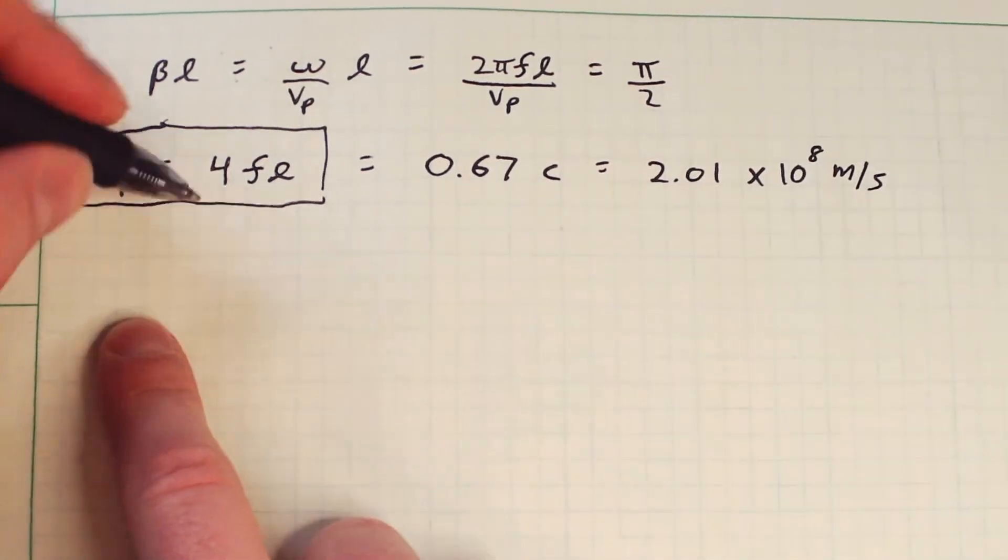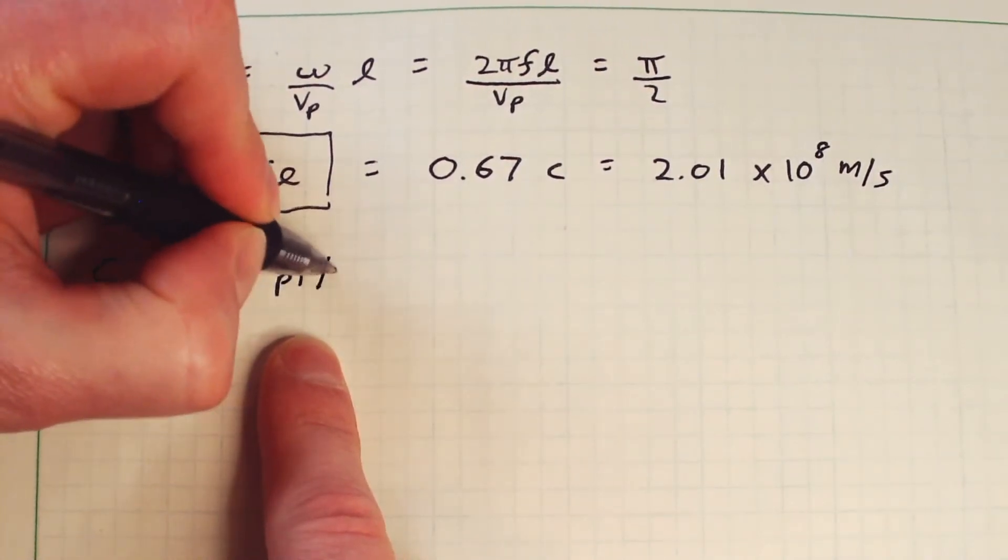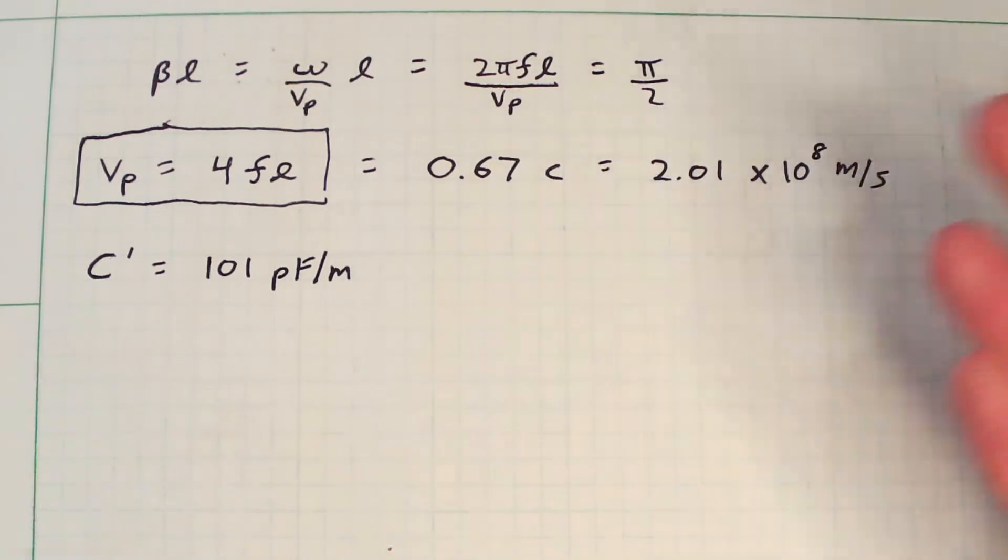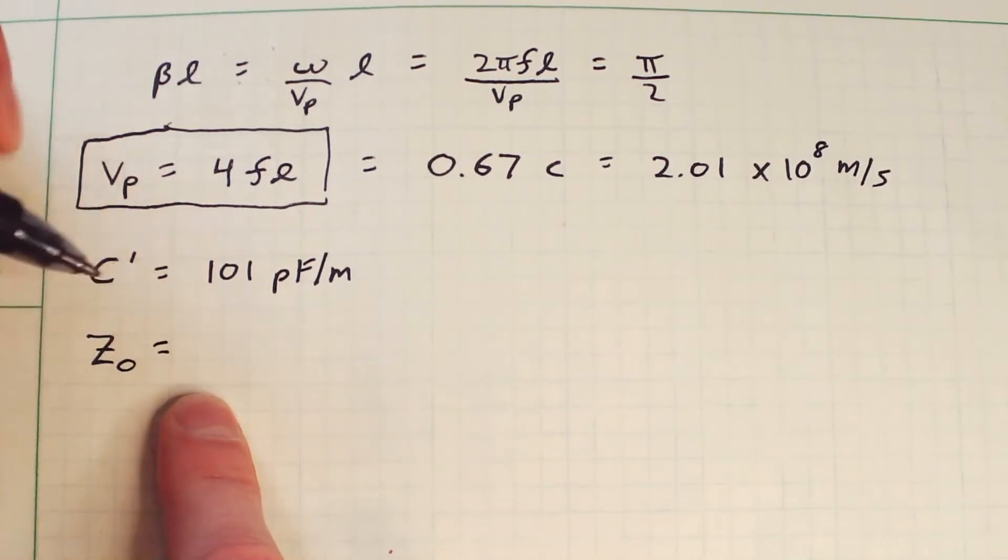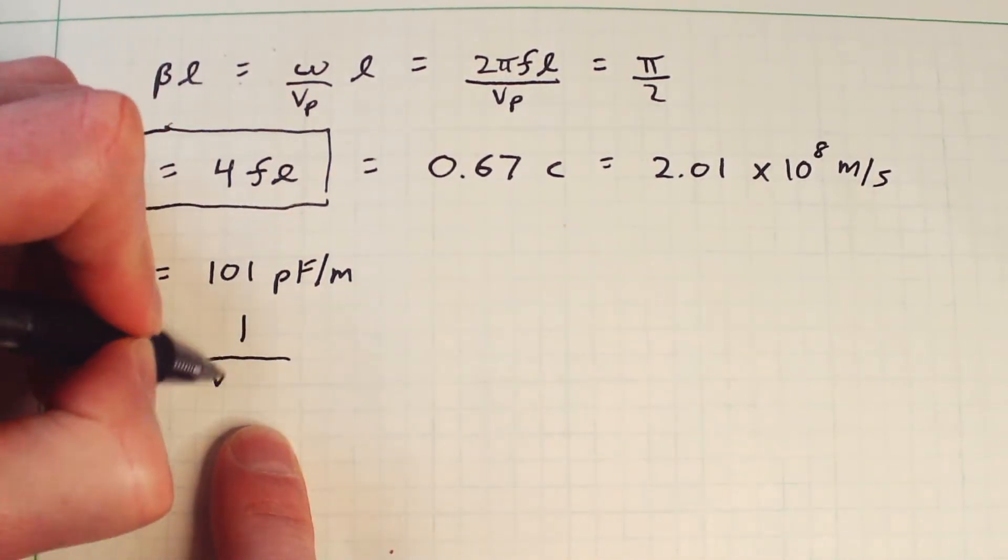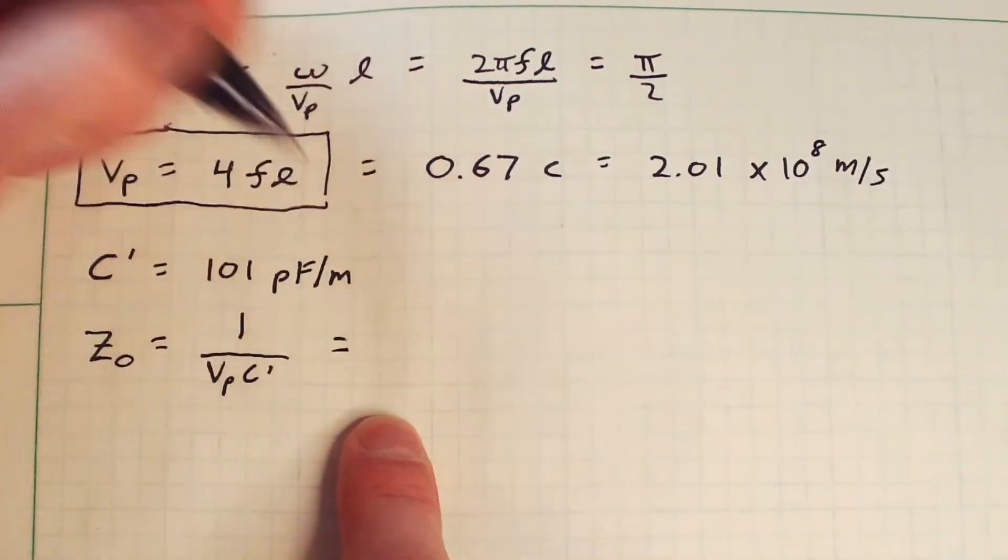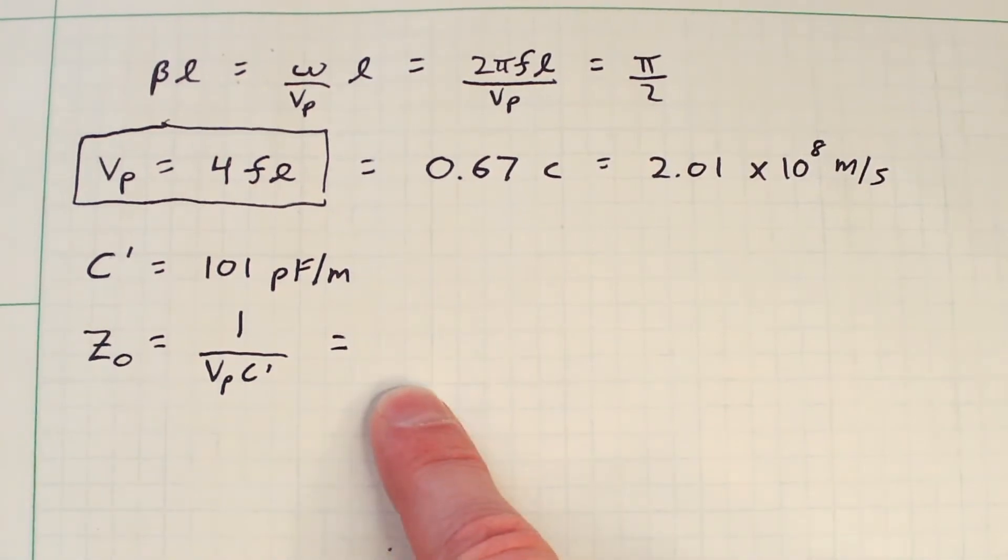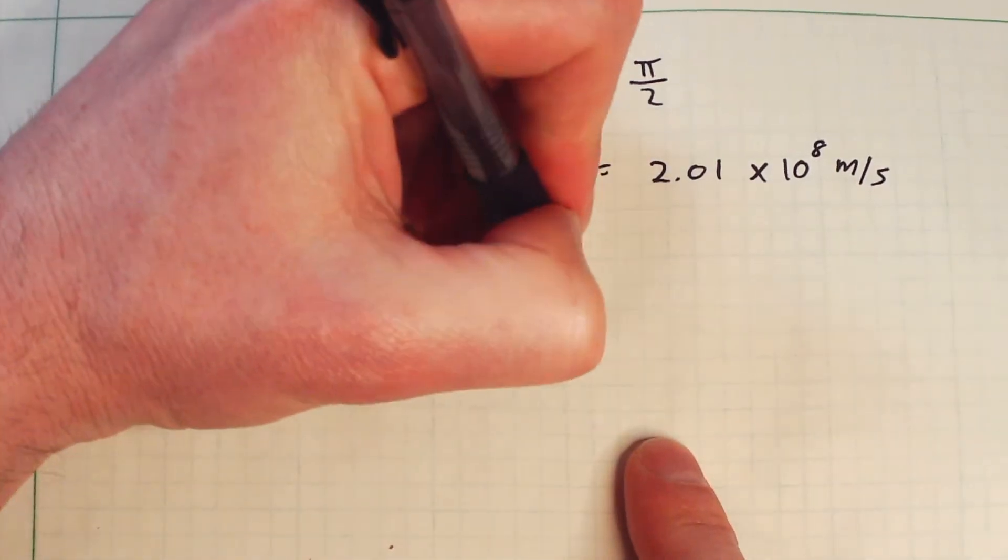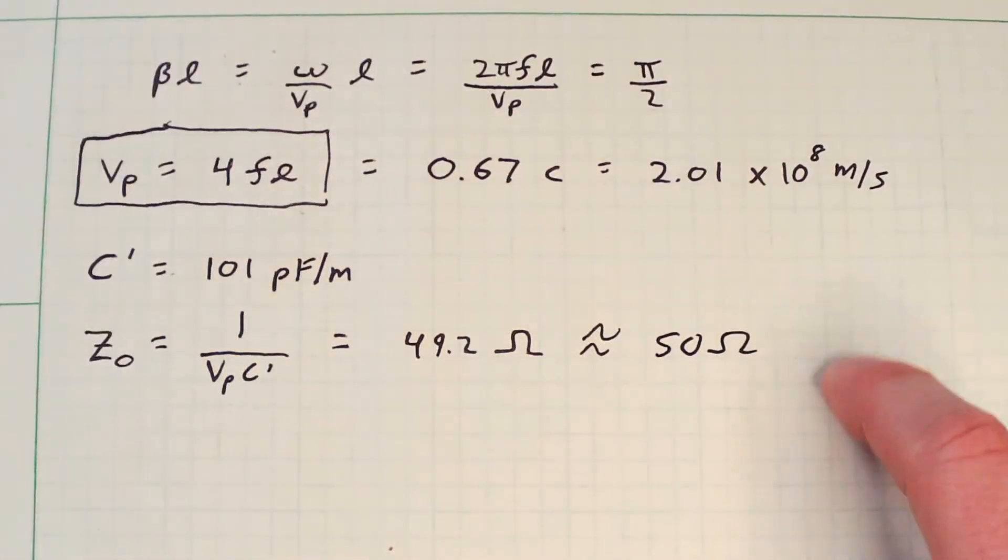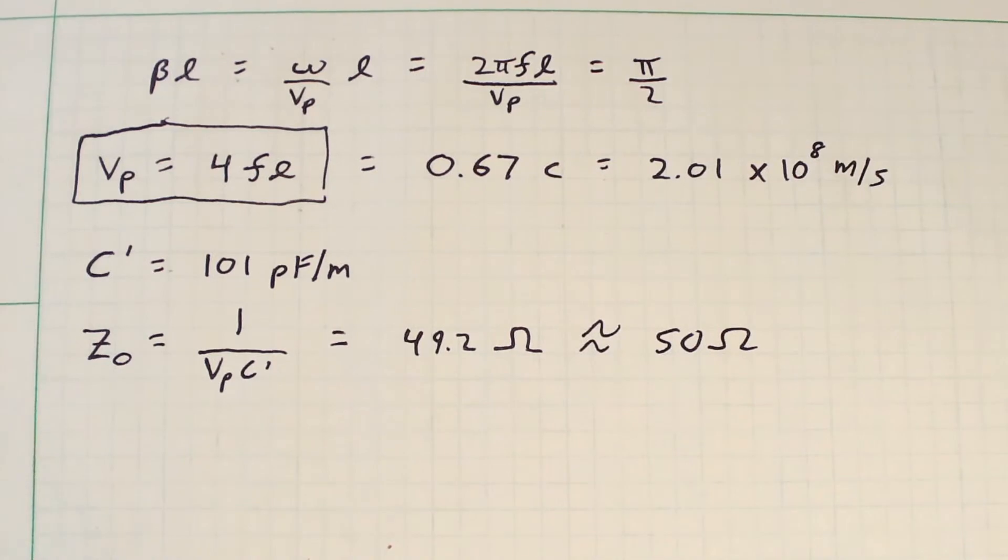So remember also that the characteristic capacitance was C' equal to 101 picofarad per meter. So given those two bits of information, all I have to do is a little bit of math and I can calculate the characteristic impedance, which is 1 divided by Vp times C'. Which you plug in these two values here and I've already done the numbers offline and you come out to something like 49.2 ohms given the values that I've measured here. Or approximately, if you round a little bit, 50 ohms plus or minus maybe an ohm, half an ohm, depending on the precision of your measurement there. So that's pretty good, which is what we'd expect for most cable.